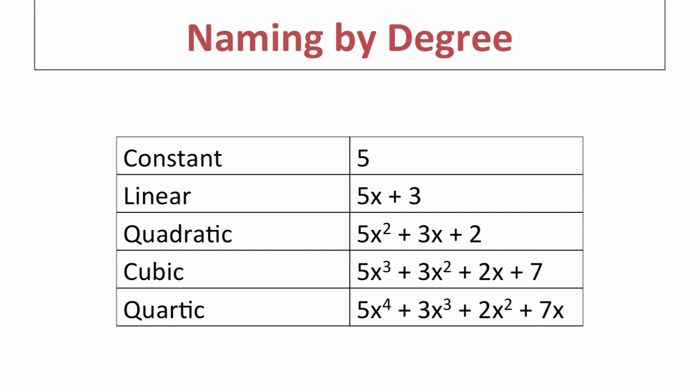If your highest exponent is 2, as in 5x squared plus 3x plus 2, that is called a quadratic function — something you will study a lot in algebra 1 and algebra 2. A cubic function has a highest exponent of 3, as in 5x to the third, and a quartic function has a highest exponent of 4.